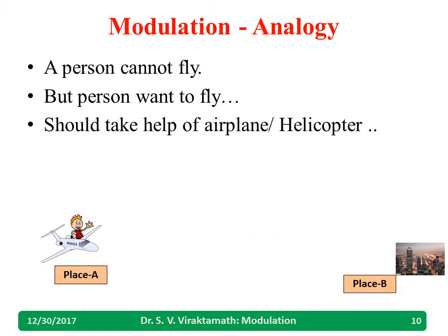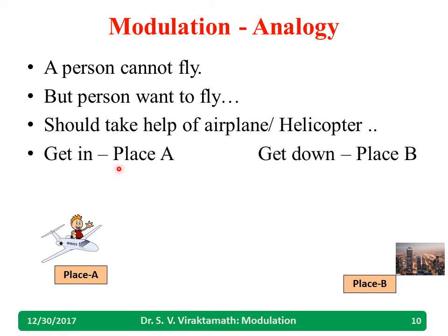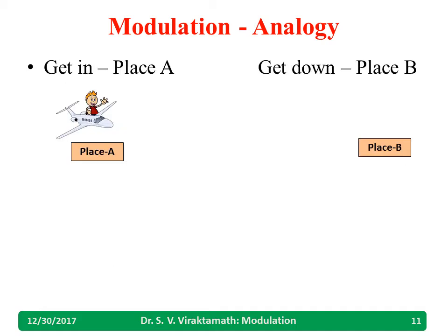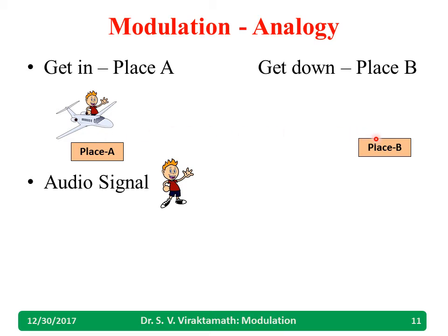The airplane will fly and the person can get down at place B. Now, the person gets into the airplane at place A and gets down at place B. We can use this same idea to understand modulation. The audio signal is like the person. If a person tries to fly from A to B, they cannot reach. Similarly, an audio signal transmitted from place A will never reach place B.